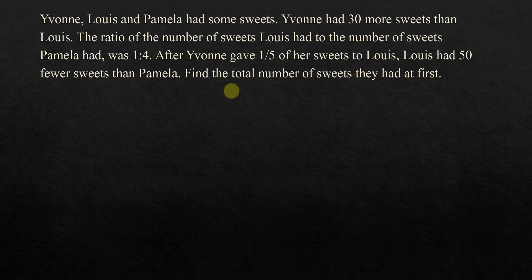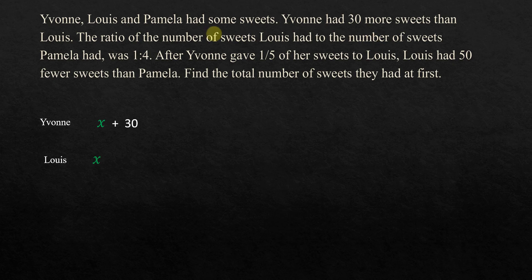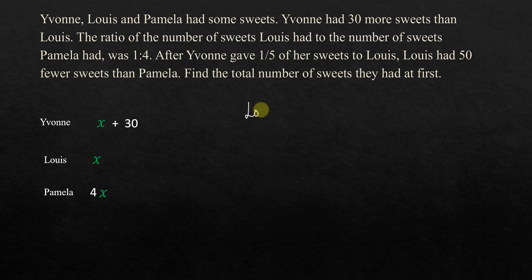There is a comparison between Yvonne and Louis — Yvonne had 30 more sweets than Louis, so Louis is our reference. Let's say the number of sweets Louis has is x, which means Yvonne has x plus 30 sweets. Since the ratio of Louis to Pamela was 1 to 4, Pamela has 4x. After Yvonne gave one-fifth of her sweets to Louis, Louis now has x plus one-fifth of (x plus 30).